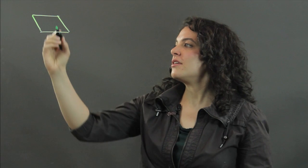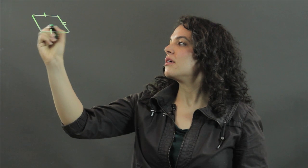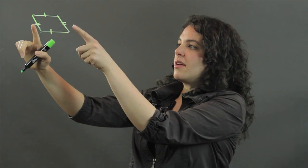First, if you notice that you have two pairs of opposite sides that are congruent, then you have a parallelogram.